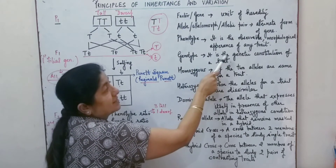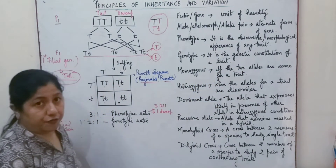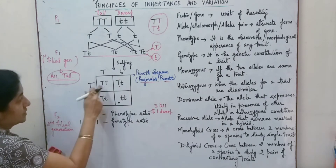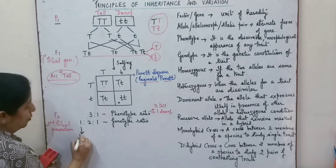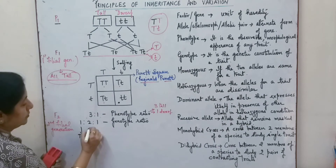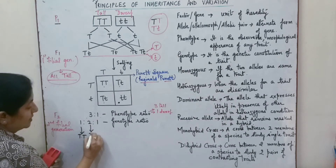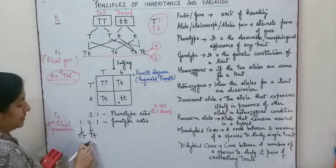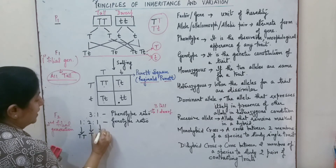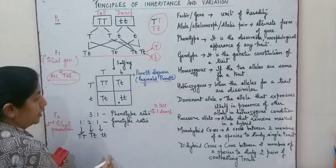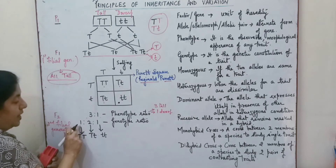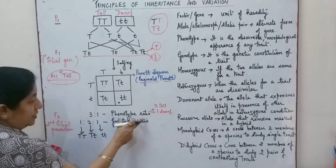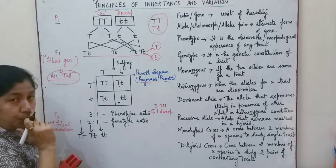Genotype is the genetic constitution of a trait. Over here it is different: we have one pure tall, two with the similar allelic pair in heterozygous form, and one pure dwarf. So the genotype ratio is 1:2:1, and this applies to the cross known as the monohybrid cross.